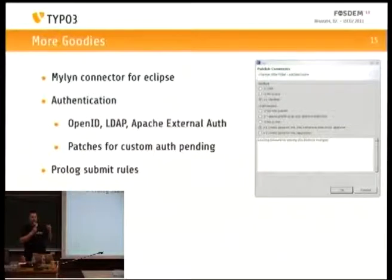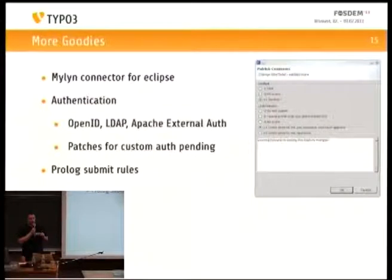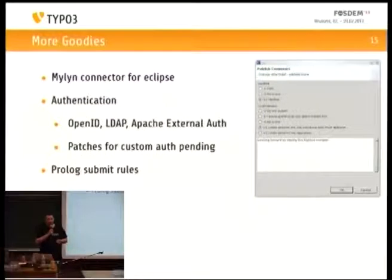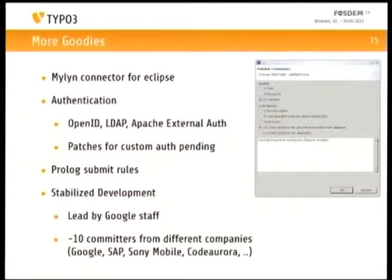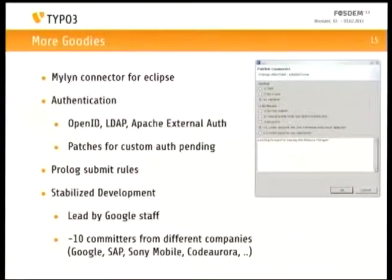There's enforcement of enough positive votes — the votes required to be able to submit a change. There's a Prolog rule engine in which you can define also on a per-branch basis how many reviews are needed. Gerrit was developed by Google for Android source code review — that's the reason it was introduced. Development is still led by Google staff, but there are now also contributors from HP and Sony Mobile, so it's not Google-only. It's really a stable development.